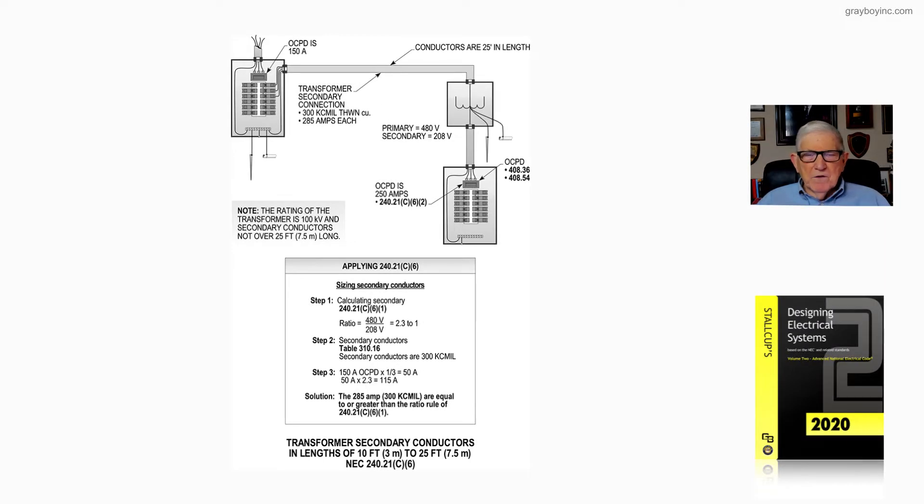Now let's review our figure 20-39 from Stalkup's Electrical Design Book, Volume 2, and we're going to deal with transformer secondary conductors and lengths of 10 feet to 25 feet.